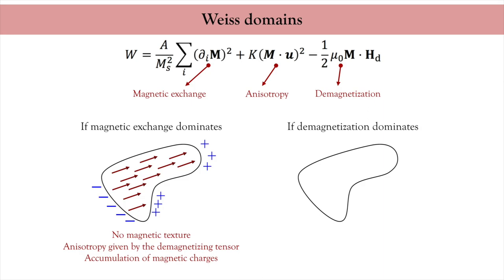In the opposite case, if the dipolar energy dominates, it tries to minimize the magnetic flux radiated by the magnetic object. Based on this idea, van den Berg proposed a geometrical method to construct the distribution of the magnetic moments inside a given magnetic material. The cancellation of the magnetic charges at the surface of a magnetic volume imposes that the divergence of the magnetization vector vanishes.